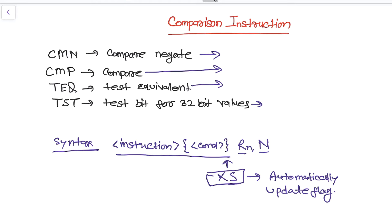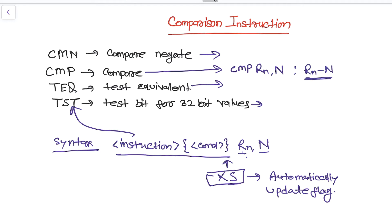So we have instruction, Rn, and N — with no S suffix needed. In the case of CMP, if we apply CMP Rn and N, what will happen is it will subtract Rn minus N.